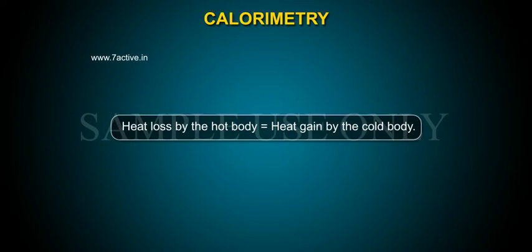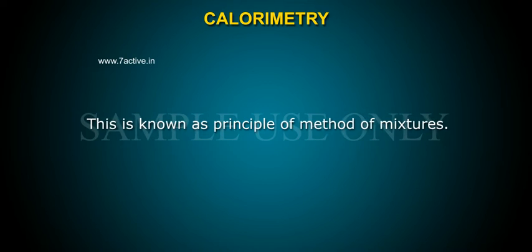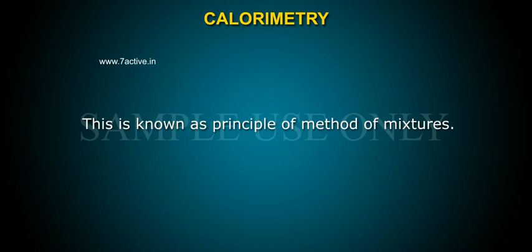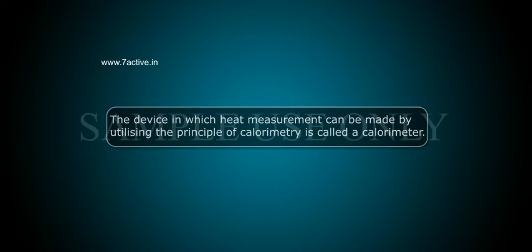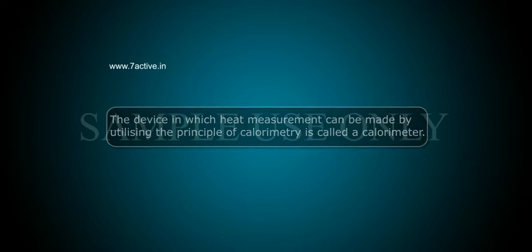Heat lost by the hot body is equal to heat gained by the cold body. This is known as the principle of method of mixtures. The device in which heat measurement can be made by utilizing the principle of calorimetry is called a calorimeter.